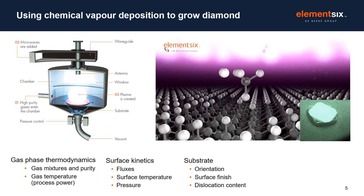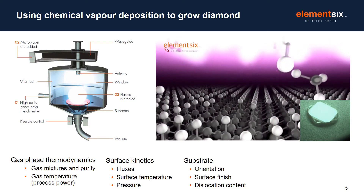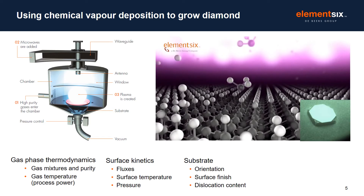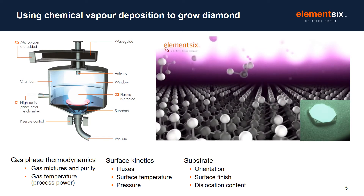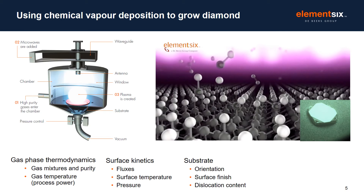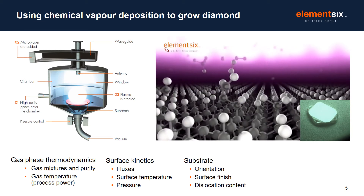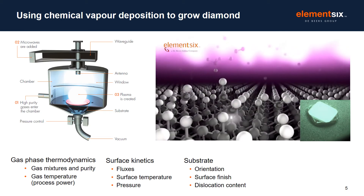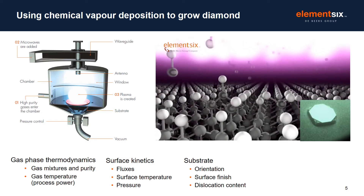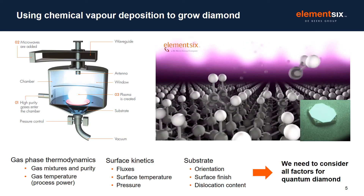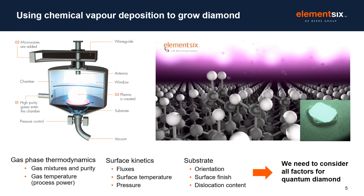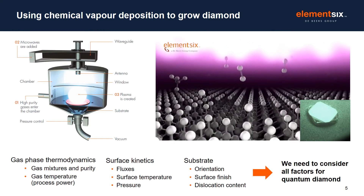The hydrogen also terminates the whole surface, stopping it reconstructing into graphite. In the video in the bottom right, we can see a time-lapse video of the CVD diamond growing. So by carefully controlling the gases, the microwave power, the pressure and temperature, we can control how the diamond grows. And by selecting the right conditions, we're able to control the quality of the diamond.